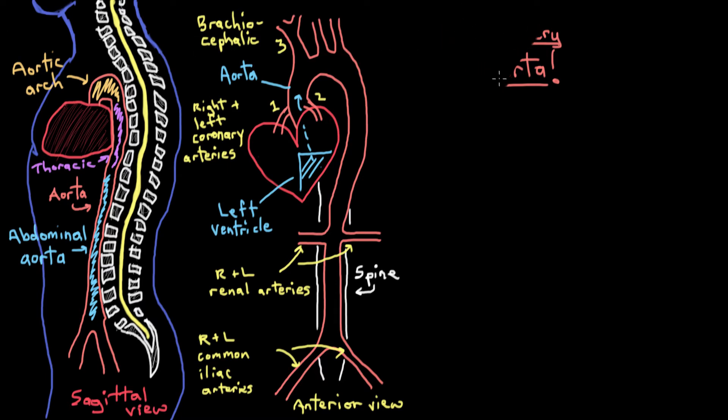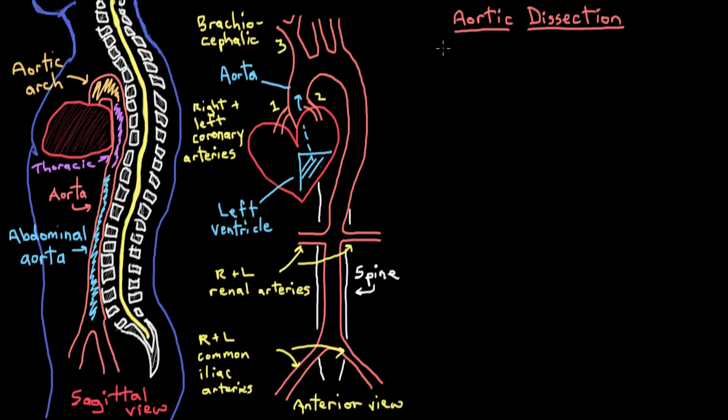So by now it's pretty clear that the aorta is really important. You definitely want your aorta to stay nice and healthy so that it can continue to be the main pipeline for your blood. But sometimes things go wrong. One of the things that can go wrong is something called an aortic dissection — a life-threatening condition where there's a separation of the layers in the wall of the aorta.